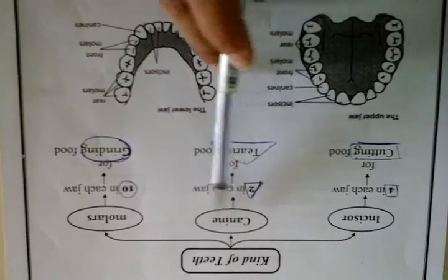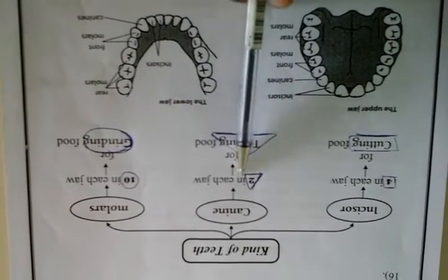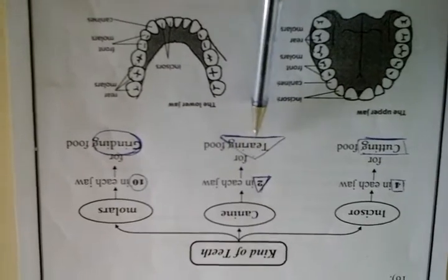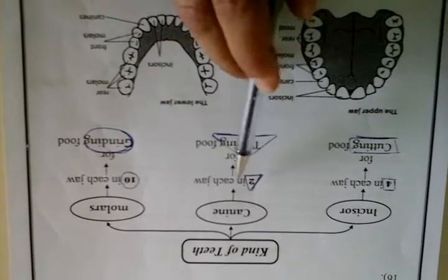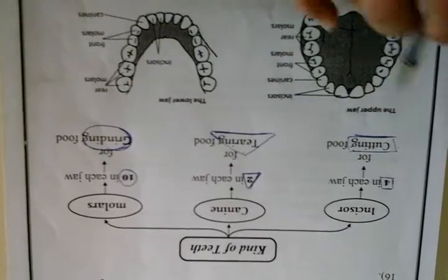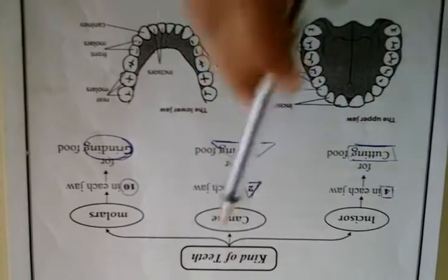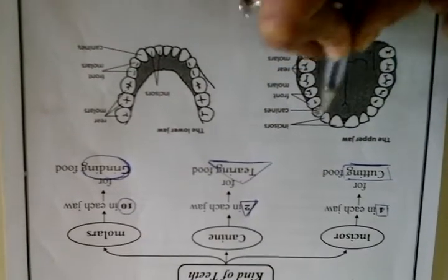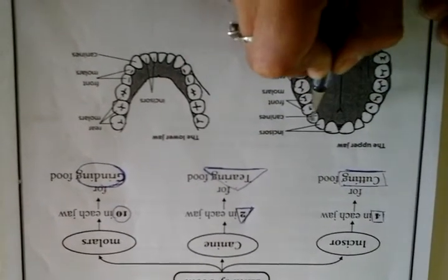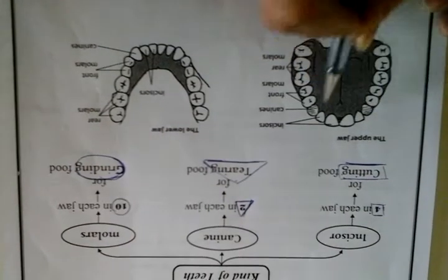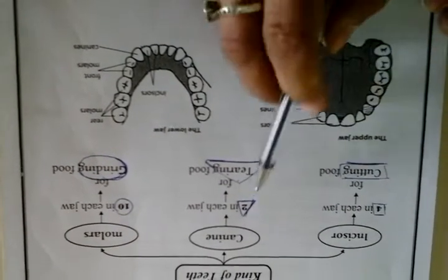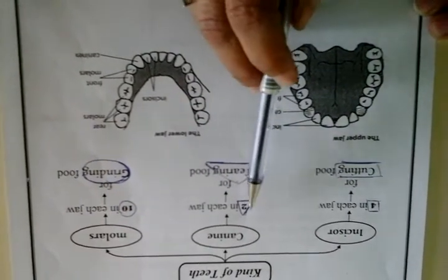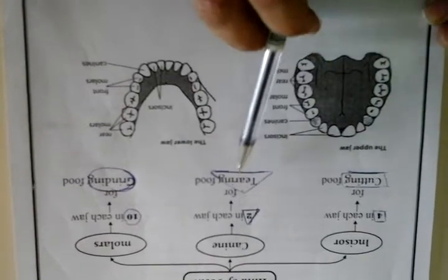The second type is canine — two in each jaw. The function of canine teeth is tearing. Let's see on the diagram. Canine: here, and on the opposite side, here. One and two — two in each jaw, for tearing.